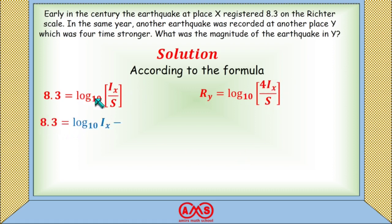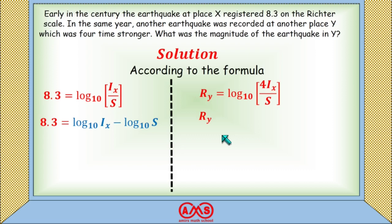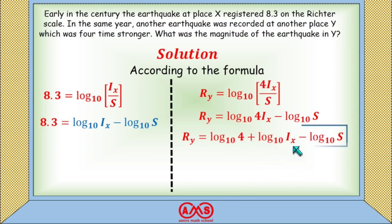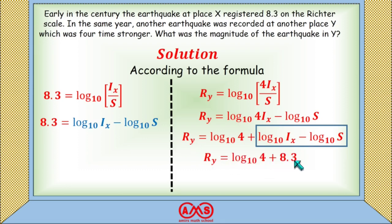Applying the logarithm formula, we can expand R_Y = log₁₀(4·I_X / S) as log₁₀(4) + log₁₀(I_X) − log₁₀(S). This part — log₁₀(I_X) − log₁₀(S) — is similar to the X equation. Substituting, we get R_Y = log₁₀(4) + 8.3.